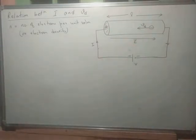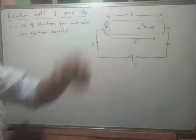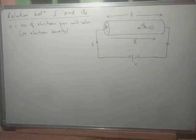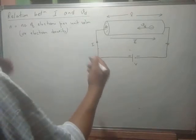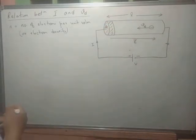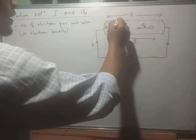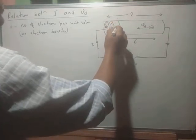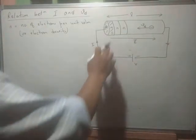Let n (small n) be the number of electrons per unit volume — in other words, the electron density. If we look at one unit volume of the conductor, there are n electrons in that unit volume.